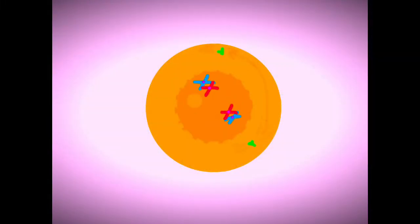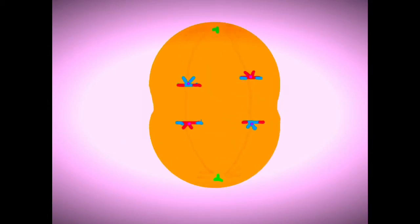In metaphase I, the tetrads attach to spindle fibers at their centrioles and line up at mid-cell. In early anaphase I, the tetrads separate and the paired chromatids move along the spindle to their respective centrioles.